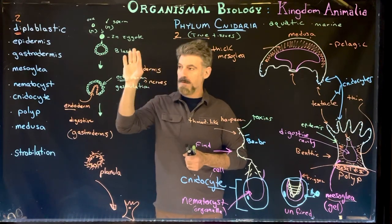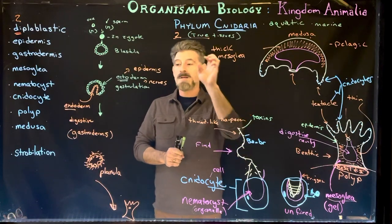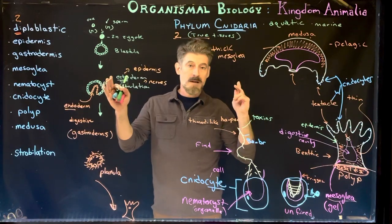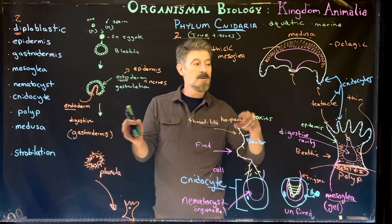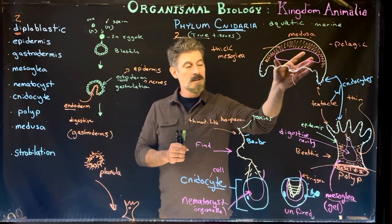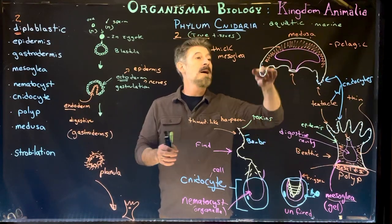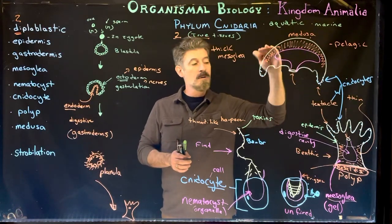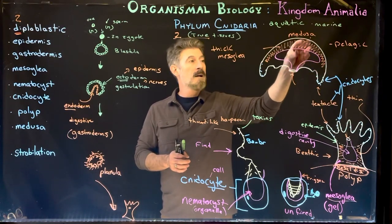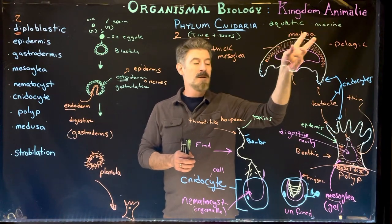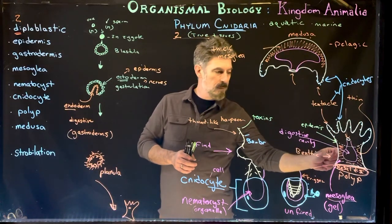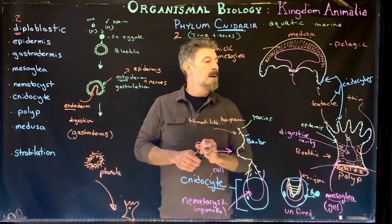To summarize: cnidarians are diploblastic, having two true embryonic tissues — the gastrodermis, which lines the digestive cavity, and the epidermis, which lines the outside of the animal. In between is the gel-like mesoglia, which is very thick in sea jellies (medusae) and very thin in the polyp form of the organisms.